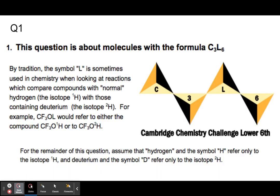Question one is about molecules with the formula C3L6. By tradition, the symbol L is sometimes used in chemistry when looking at reactions which compare compounds with normal hydrogen (the isotope H-1) with those containing deuterium (the isotope H-2). For example, CF3OL would refer to either the compound with H-1 or H-2. But for the remainder of this question, assume that hydrogen refers exclusively to H-1, and later in the question D refers to H-2.